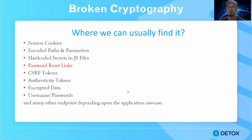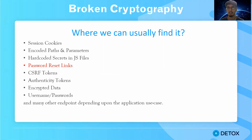There are a few endpoints where we can look for broken cryptography, like session cookies. For example, if the application uses JWToken as the authentication mechanism, an attacker can try to see if the JWToken is using some symmetric algorithms, or try to identify none-algorithm attacks. Further, some applications use encoded paths and parameters to restrict attackers from seeing what is being passed at the backend. If weak cryptography is used, an attacker can try to decode the paths being passed and perform malicious actions.